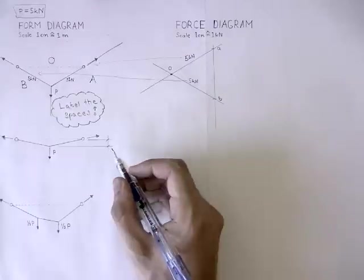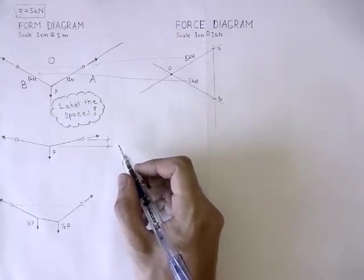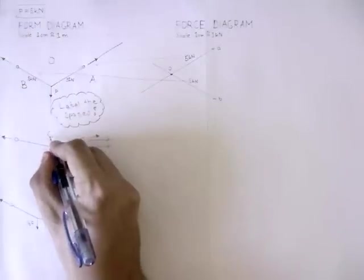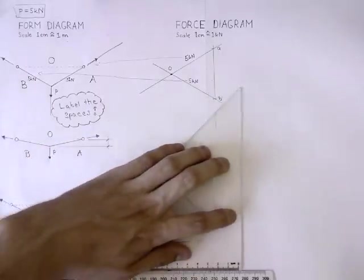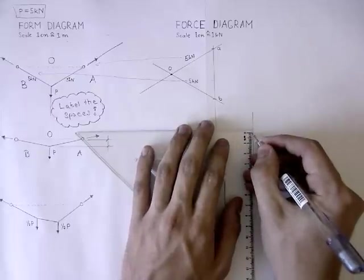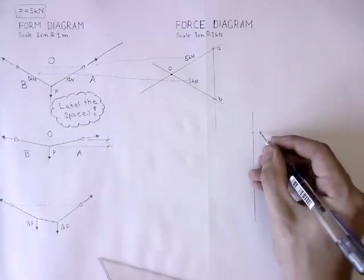In the second example, the overall height of this structure, a so-called structural depth, has been reduced. Let's see what happens with the forces. First label the spaces. Draw the load line. The force is again 5 kN. Now label the points, starting with A.